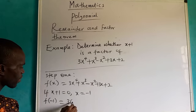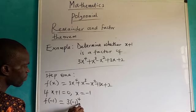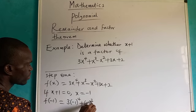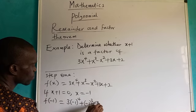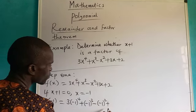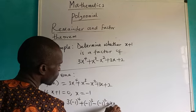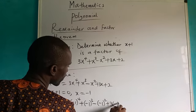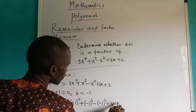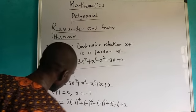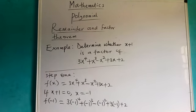We substitute: three open bracket minus one to the power four, plus open bracket minus one to the power three, minus open bracket minus one squared, plus three open bracket minus one, close bracket, and then plus two.